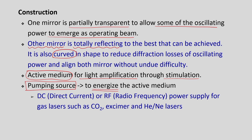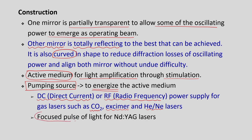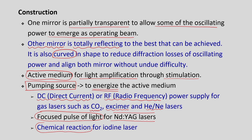There are various types of pumping sources. Electrical energy — either direct current or RF (radio frequency) power supply — is used for CO2 lasers, excimer lasers, and helium-neon gas lasers. Focused pulses of light can be used as a pumping source for solid-state lasers such as Nd:YAG. Chemical energy from chemical reactions can also be used, as in the iodine laser.